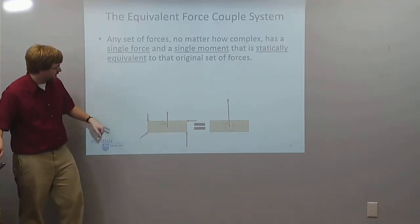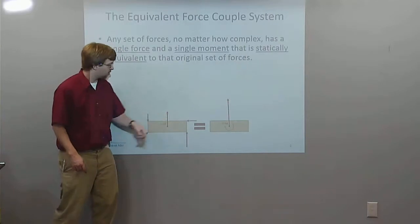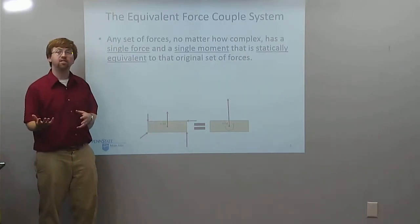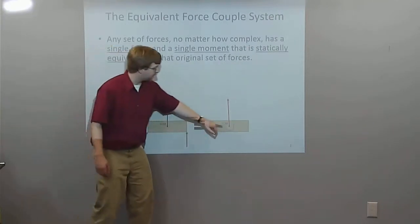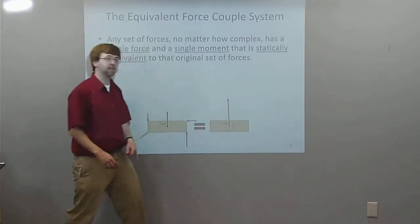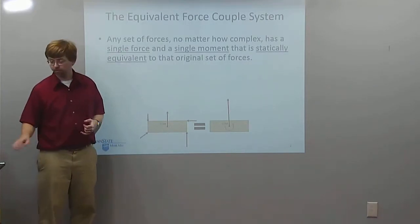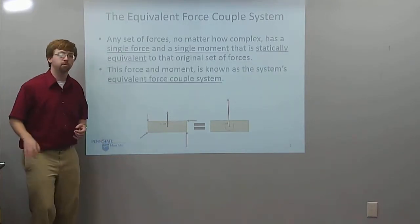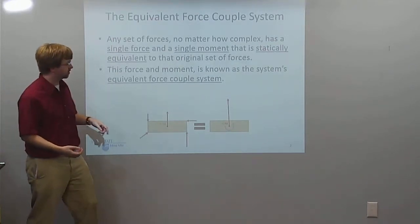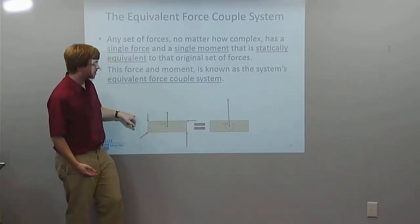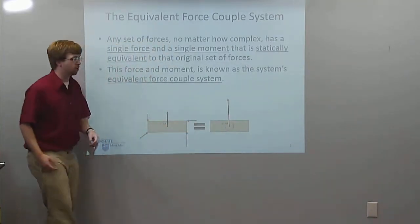An example of this: say we've got a body down here, I've got five forces acting on the whole thing. If I find the equivalent force couple system, I can find a single force and a single moment that is going to be equivalent to this original set up here. That is known as the equivalent force couple system when we reduce something complex down to just that single force and that single moment there.